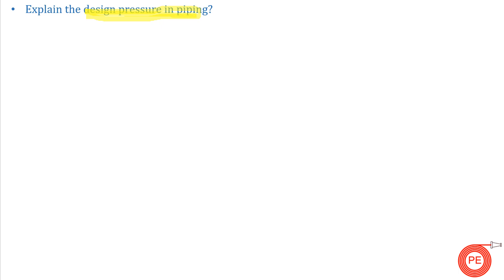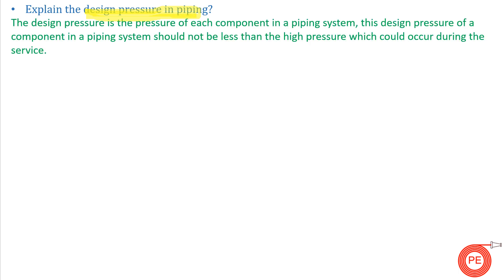Next question: explain design pressure. There are two types — design pressure and operating pressure. Design pressure is the maximum pressure of each component in a piping system; it should not be less than the highest pressure that could be incurred during service. Operating pressure is the normal pressure at which your plant will operate.